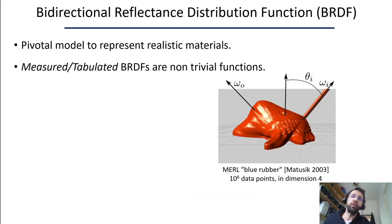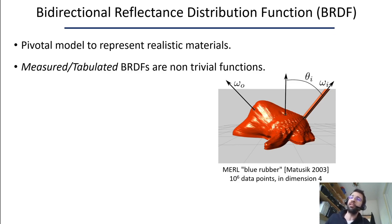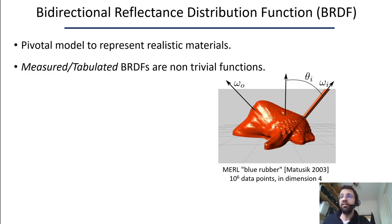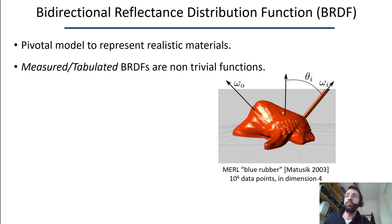This work is about a bidirectional reflectance distribution function, BRDF. A BRDF is used to represent a realistic material — it defines how much light is reflected in a given direction when a certain amount of light is incident from another direction. BRDFs can be measured with goniometers, which provide a set of data points in a four-dimensional space. As can be seen in the figure, those measured BRDFs are not trivial and may represent a large amount of data.